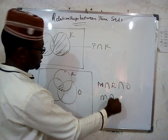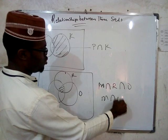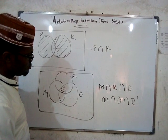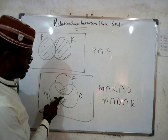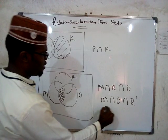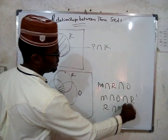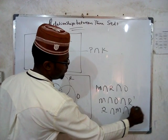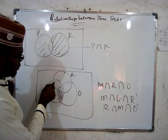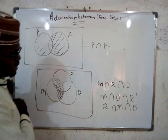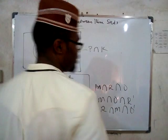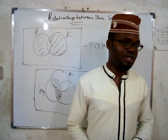Where can we have M intersection O intersection R prime? That is here — in the region where M and O overlap but excluding R. And where can we have R intersection M intersection O prime? That is in the region where R and M overlap but excluding O. You need to know where to find each one, because we are going to be using this to solve real problems in Venn diagrams.